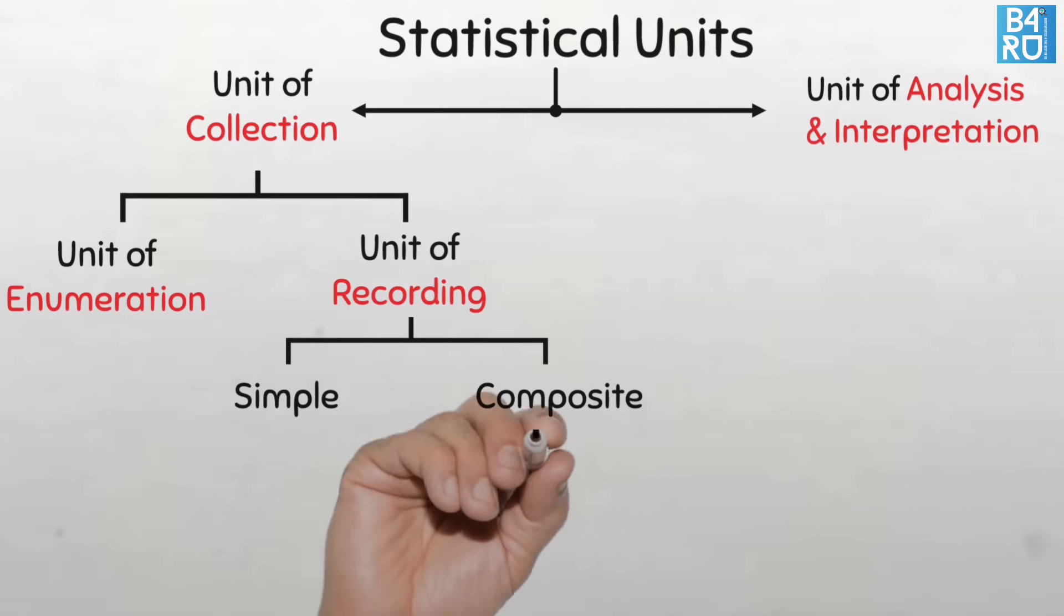Composite units can either be compound or complex, depending on the intricacies involved in the measurement. If the relationship between the measurements is not very intricate, it is called compound. However, if there is a diverse and intricate relationship between the measurements, then it is said to be complex.